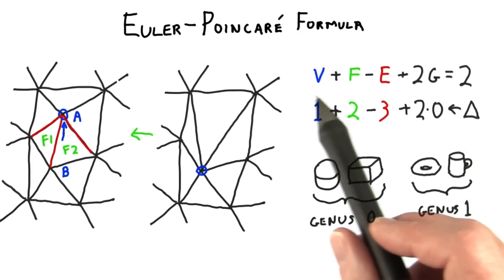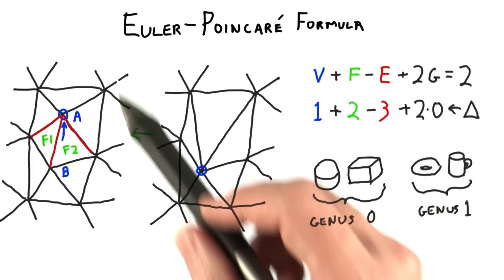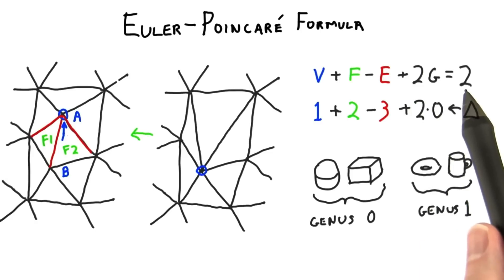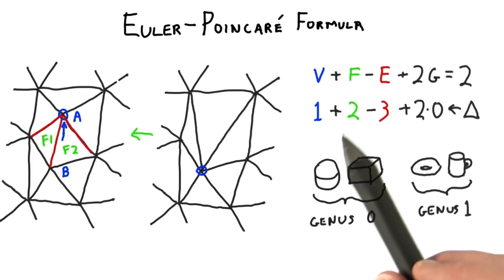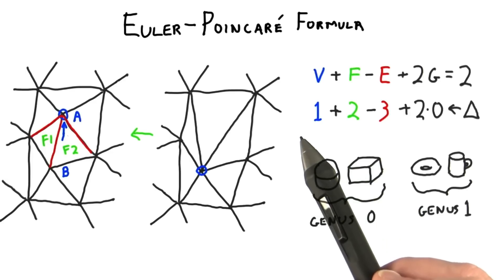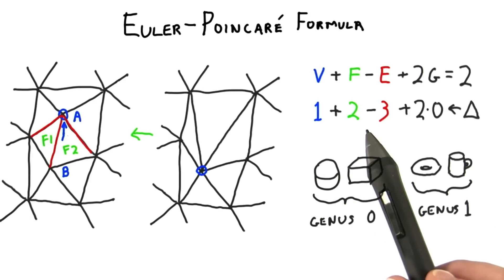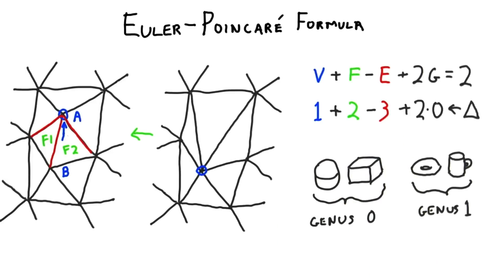In other words, this formula applies to this mesh and this mesh, and they both must come out to be the answer 2. So the delta must be 0, the difference between them. This equation says we've subtracted a vertex and two faces. To balance the equation, three edges must also be removed.